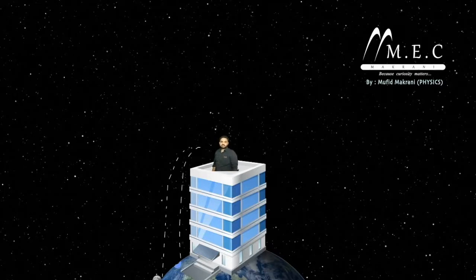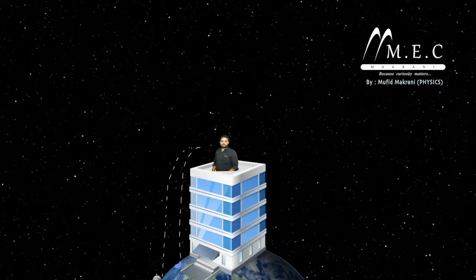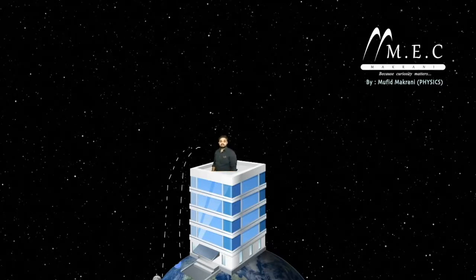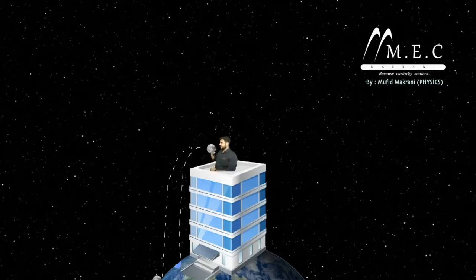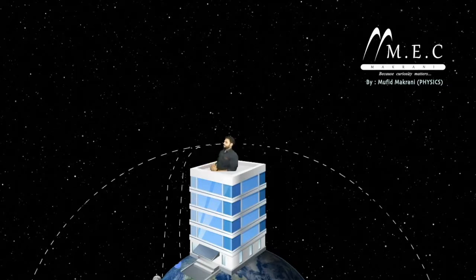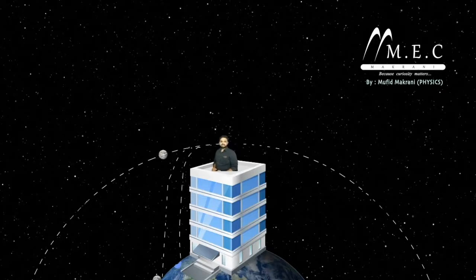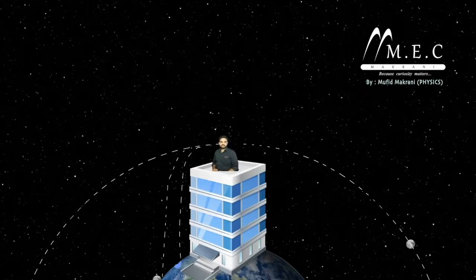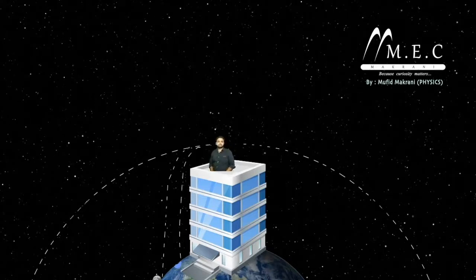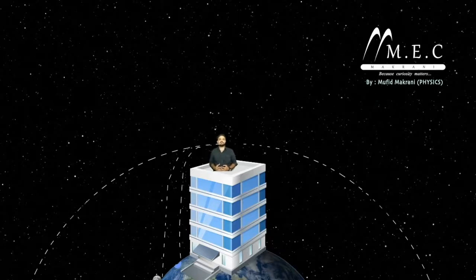But what will happen if I drop it with sufficient velocity so that it doesn't hit the earth's surface? Yes, it will set up in the orbit and start its revolution. It will not stop because there is an equilibrium between the gravitational force and linear velocity of the moon.